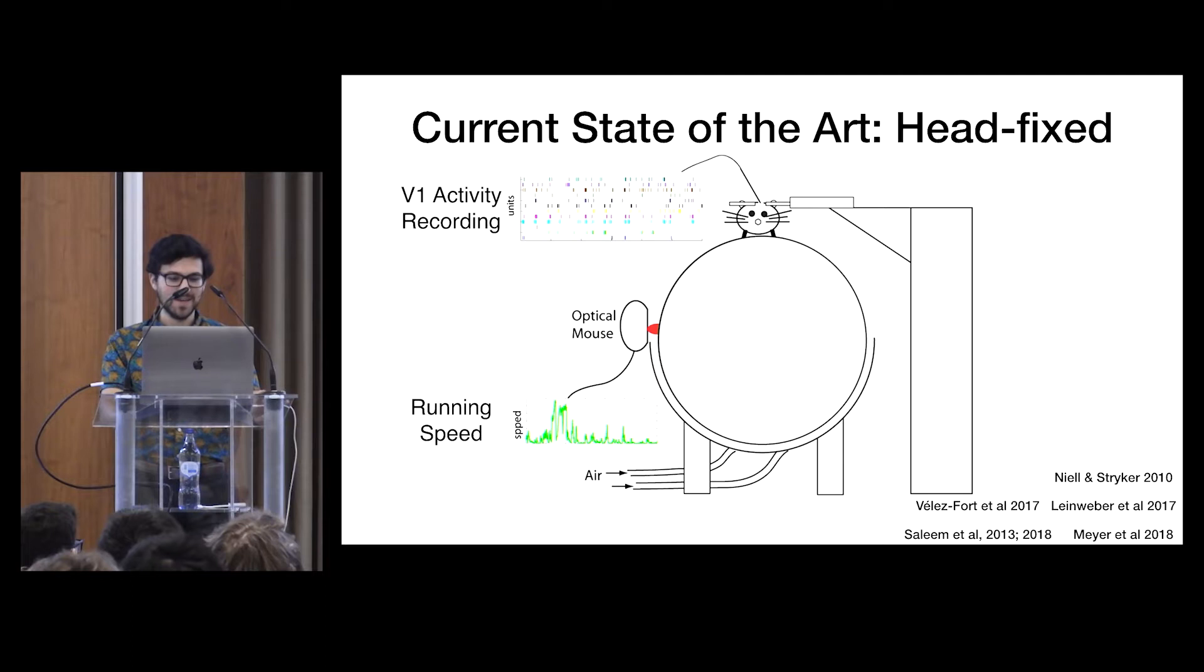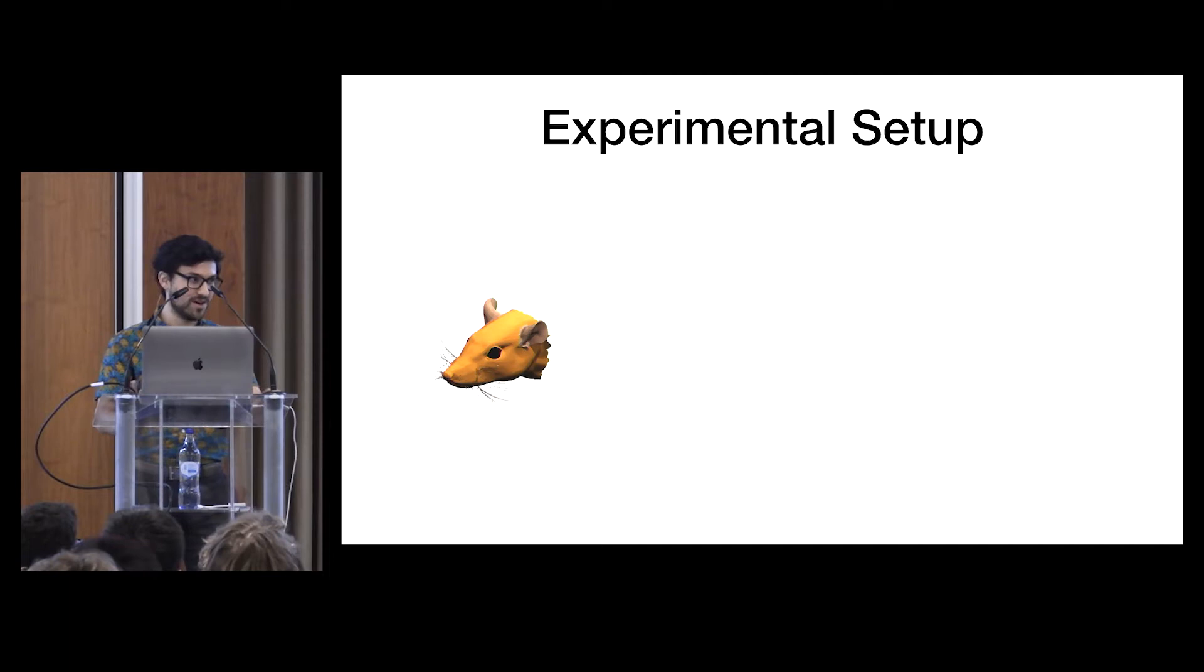So we recorded movement and neuronal activity in V1 of freely behaving rats, not hawks unfortunately. And we did these recordings continuously, 24-7, to capture the natural behavior of these animals in their home cage. We split our recordings into 12-hour chunks in the dark to find movement-related signals and 12-hour chunks in the light to find combined movement and visual signals. We then further split these recordings into two-hour sessions to just facilitate analysis.